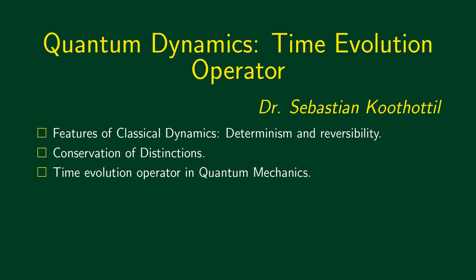We would like to obtain an equation that governs the time evolution of quantum mechanical systems. The question we are asking is: how do quantum mechanical systems change with time? In classical mechanics, we are familiar with Newton's second law, Lagrange's equations, or Hamiltonian dynamics — we have seen these things.